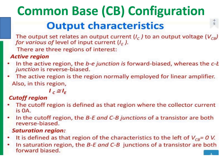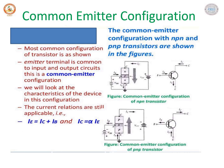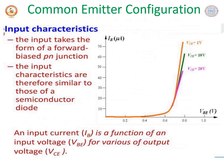Similarly, in the common emitter configuration, the emitter is common to both input and output, as you can see in the diagram. For the input characteristics in the common emitter configuration, it is a plot of input current IB versus VBE, keeping the output voltage VCE constant.